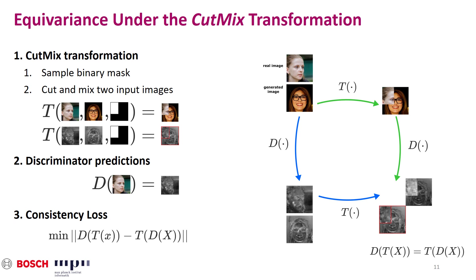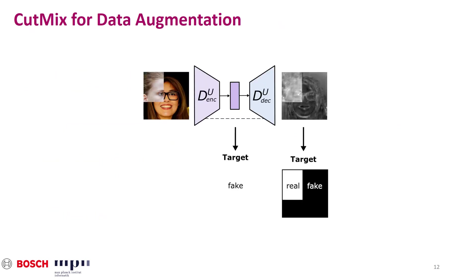The consistency loss minimizes the L2 distance between the decoder prediction of the CutMix image on one side and the CutMix of the decoder prediction of the two individual images on the other side. Apart from the consistency regularization, CutMix can also be used for data augmentation. In the original CutMix implementation for GANs, the target value for the discriminator is the fraction of the white pixels in the binary mask. However, in the U-Net discriminator we can use the binary mask to directly provide the ground truth targets for the binary cross-entropy per-pixel losses of the decoder.